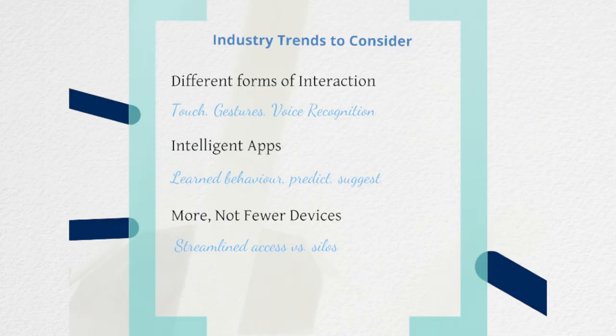Some broad industry trends to think about when you're in the concept stage of app development: think about the different forms of interaction. Apps today tend to be on a touch screen — very flat and you're touching it. But moving forward, we're starting to see stylus devices on a number of Samsung products, which is a different type of interaction that may impact how you want to develop your idea.